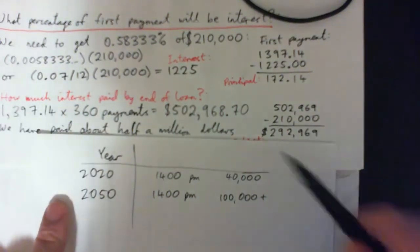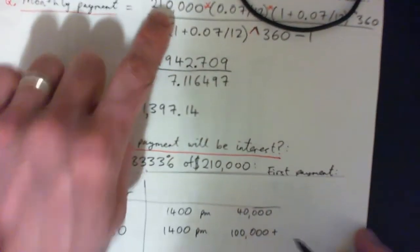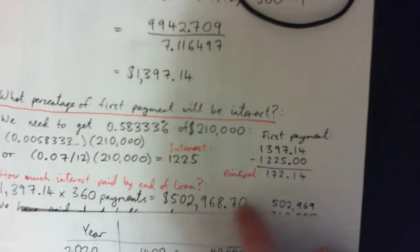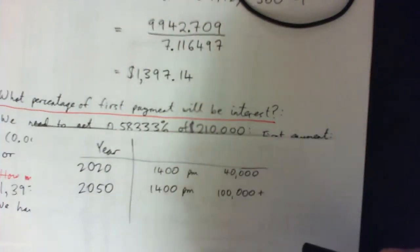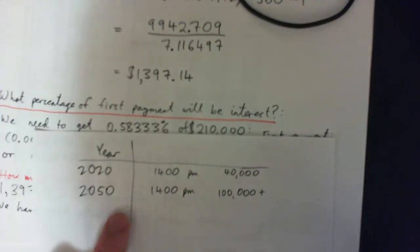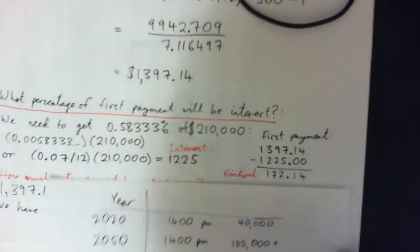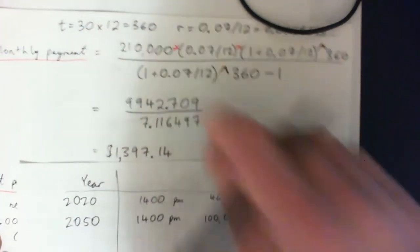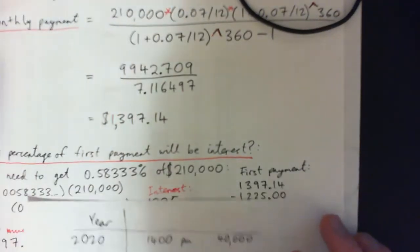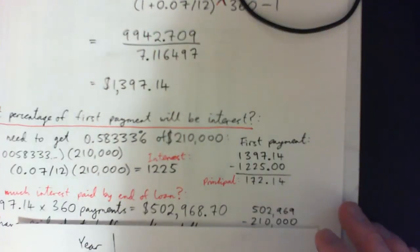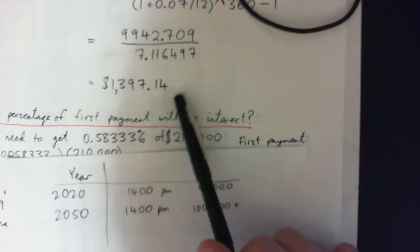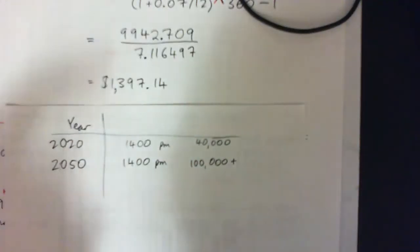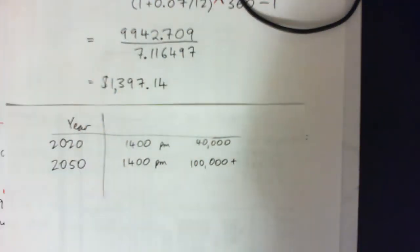Yes, you loaned $210,000 and paid back half a million — that is real money. But it's something to bear in mind. It would obviously be great to get a lower interest rate, put down a bigger down payment, or pay the loan off earlier. But one upside is that if you're paying $1,400 a month in 2020, you'll still be paying $1,400 a month in 2050, and by then it's not going to seem that bad.